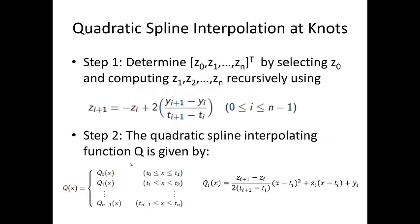Let's summarize things with an algorithmic description. So, step one, determine the z0, z1, zn, transpose by selecting z0 and computing z1, z2, through zn recursively using the formula. The quadratic spline interpolating the function q is then given by the formula underneath the second bullet.